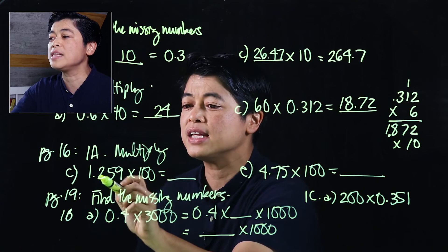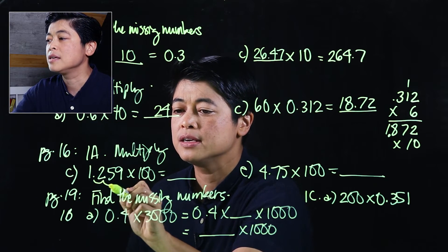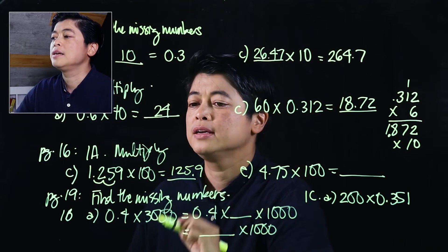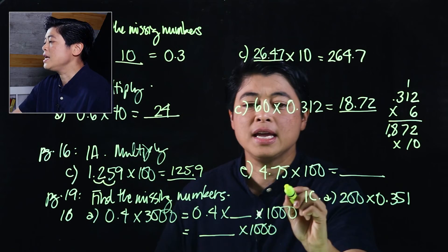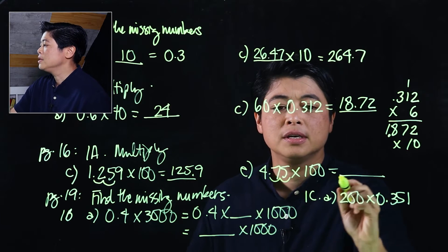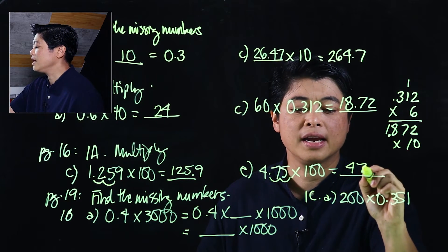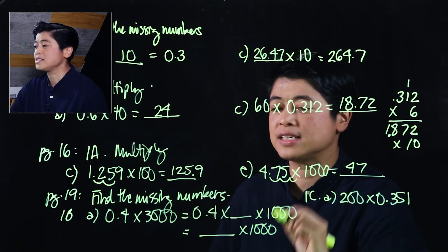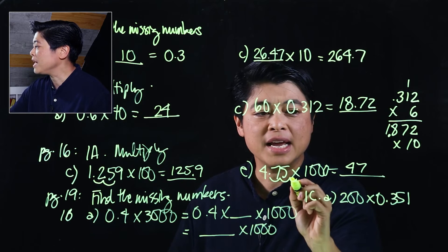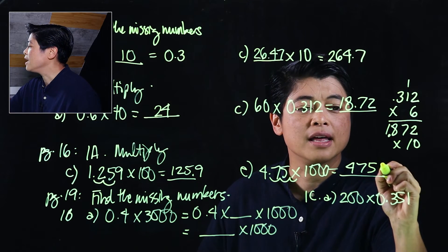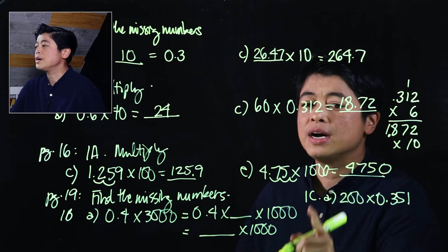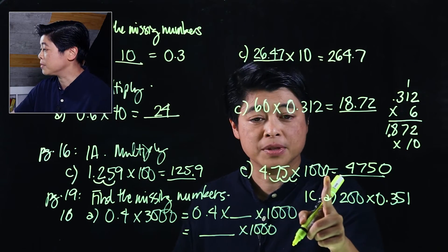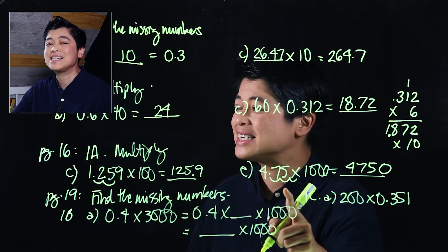For multiplication by 100, move the decimal two places to the right — the answer is 125.9. For the next problem, moving two places gives 400. However, the next problem is times 1000, so move three places to the right. After moving three places, we add a zero, giving the correct answer.